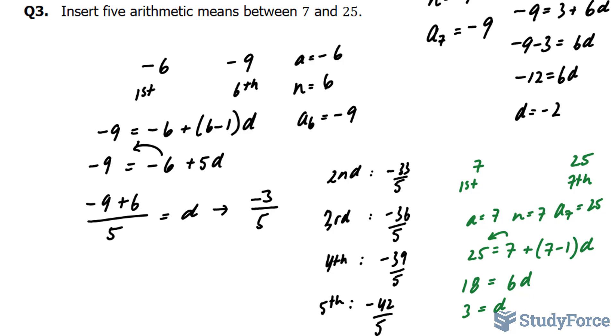Adding 3 to 7 gives us 10, then 13, 16, 19, and one more is 22. These represent the solution to question 3.